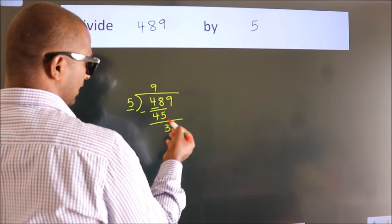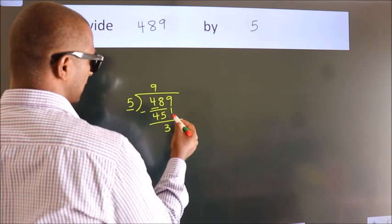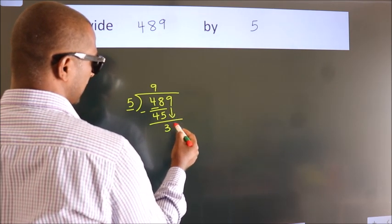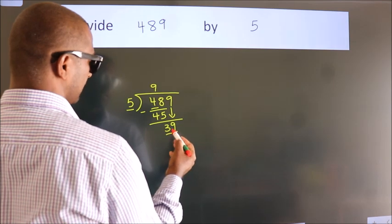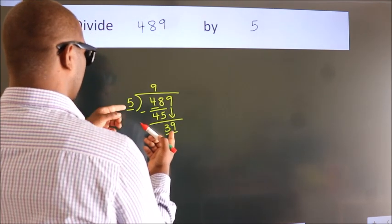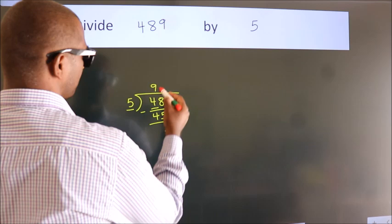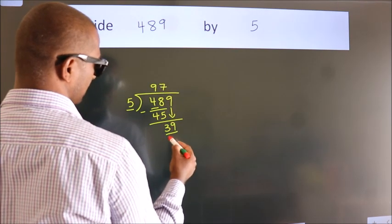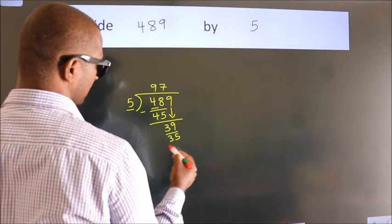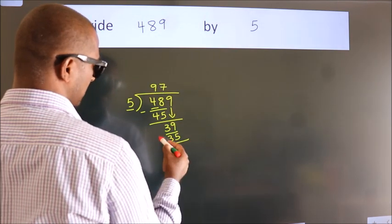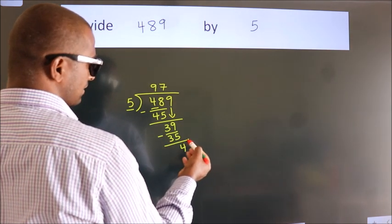After this, bring down the beside number, so 9 down. So 39. A number close to 39 in the 5 table is 5 sevens, 35. Now we subtract. We get 4.